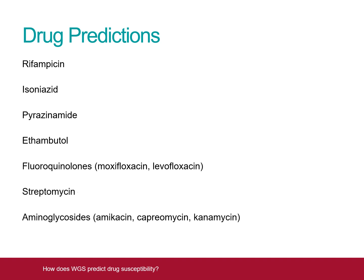Currently, the NMRS is able to provide genotypic susceptibility data for the four first-line drugs rifampicin, isoniazid, pyrazinamide and ethambutol, as well as for the fluoroquinolone group and the injectable agents.